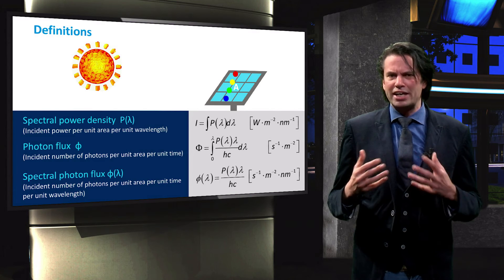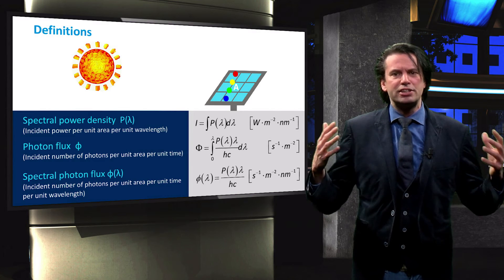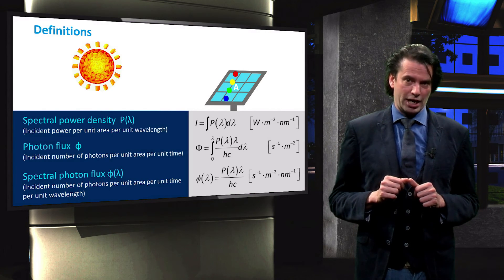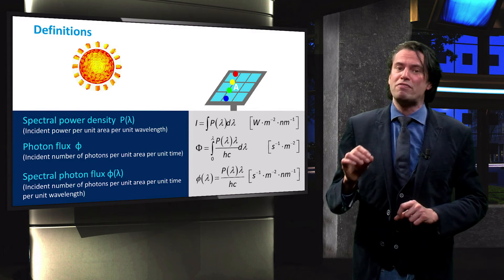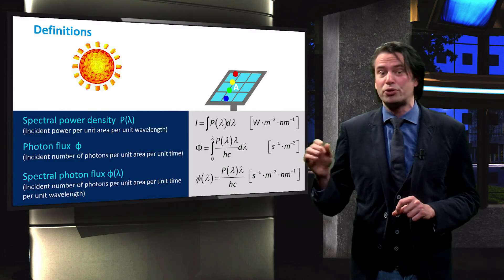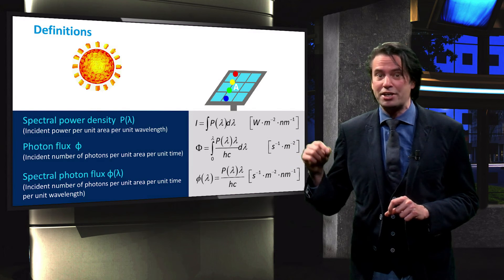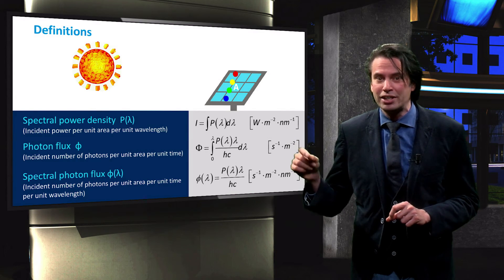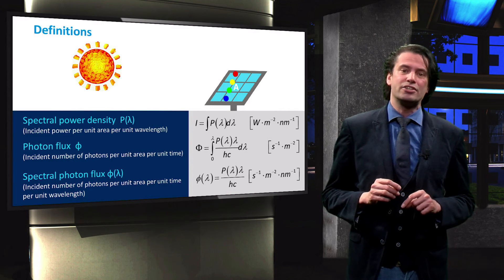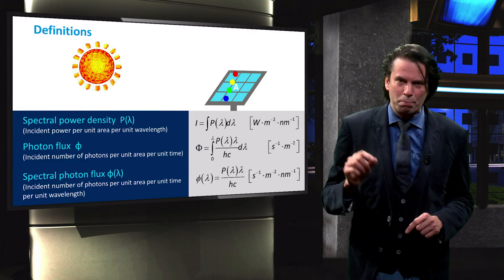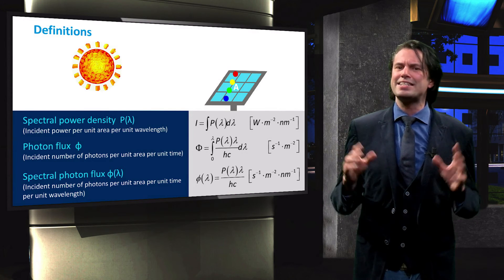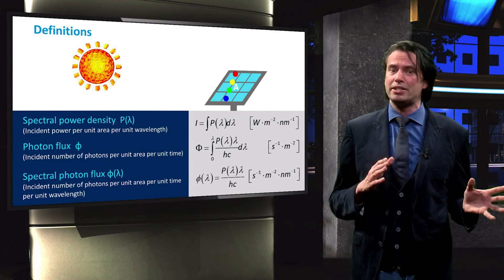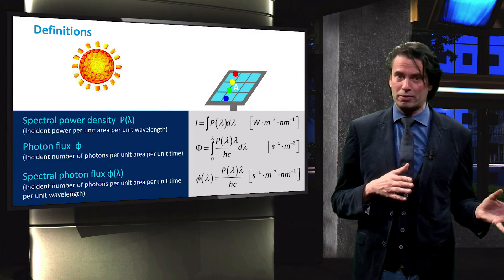The spectral photon flux is related to the spectral power density through the photon energy. Indeed, the number of photons of a certain wavelength incident on a surface per unit time multiplied by the energy of a single photon gives the energy incident on that surface per unit time. As we recall, incident energy per unit time is the very definition of power.